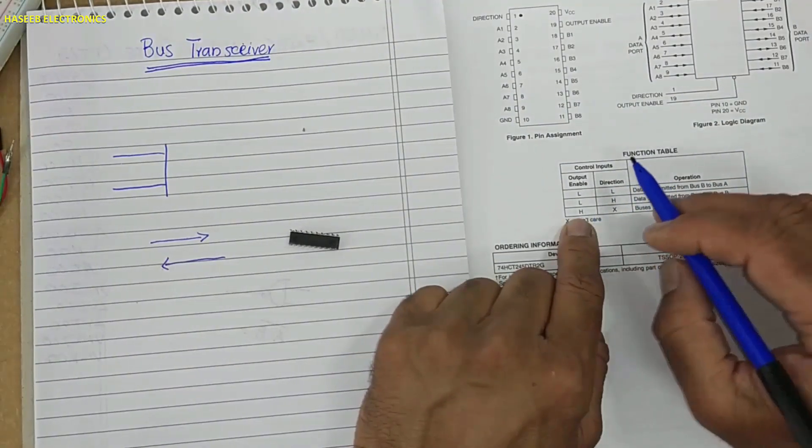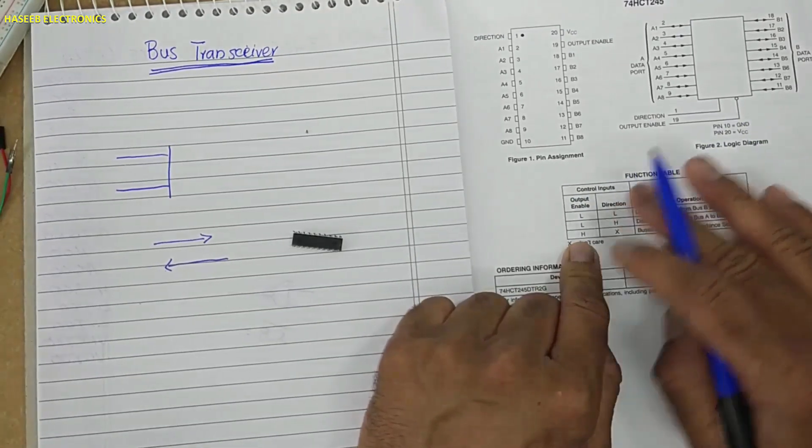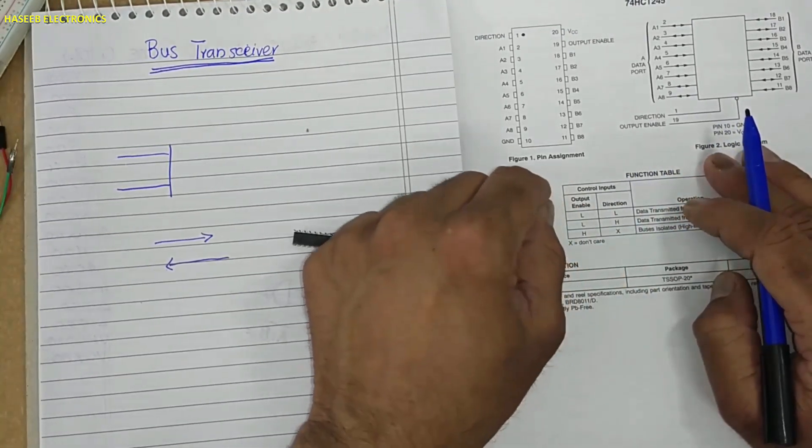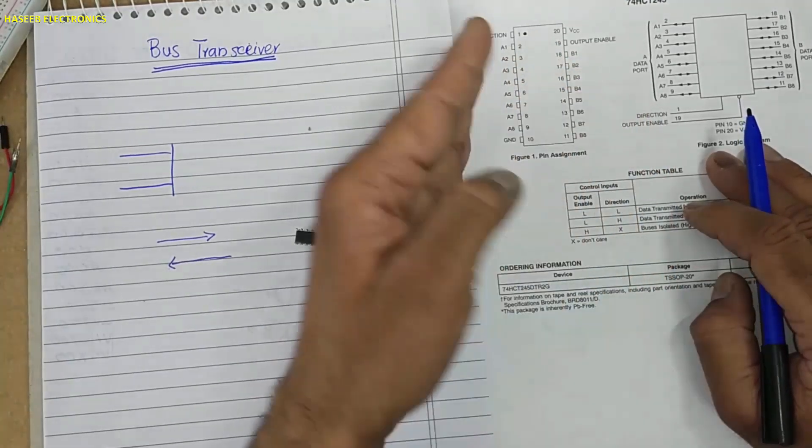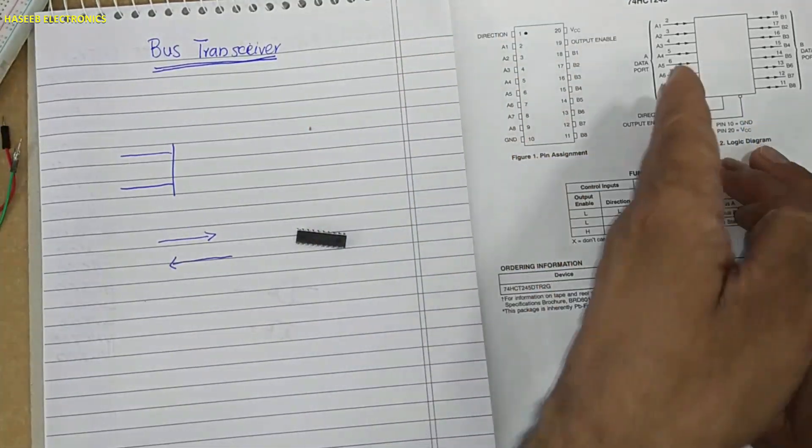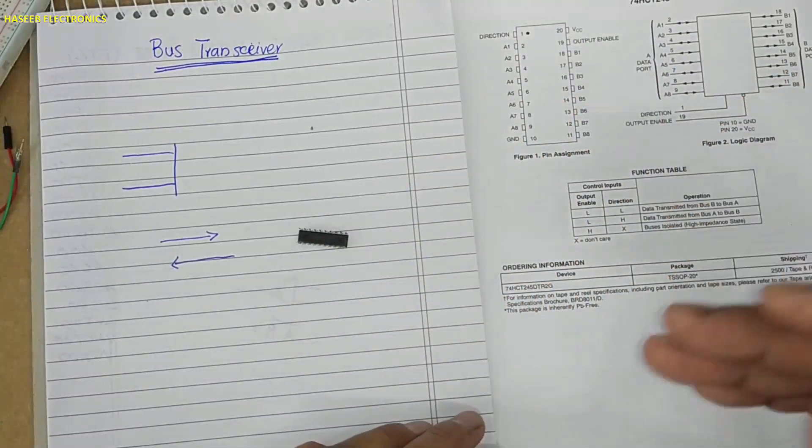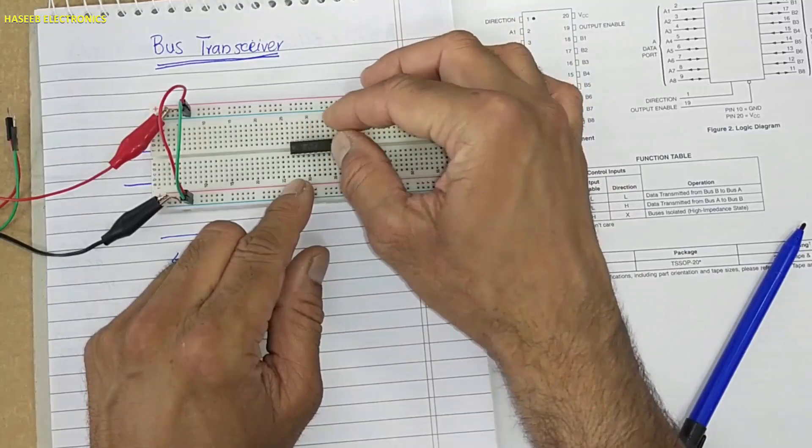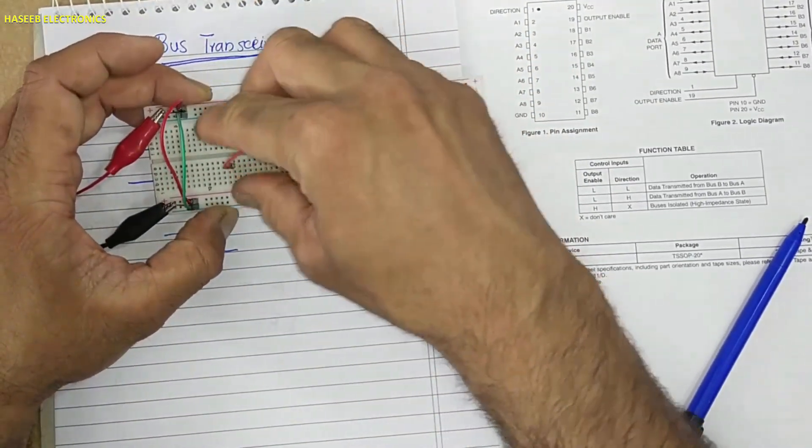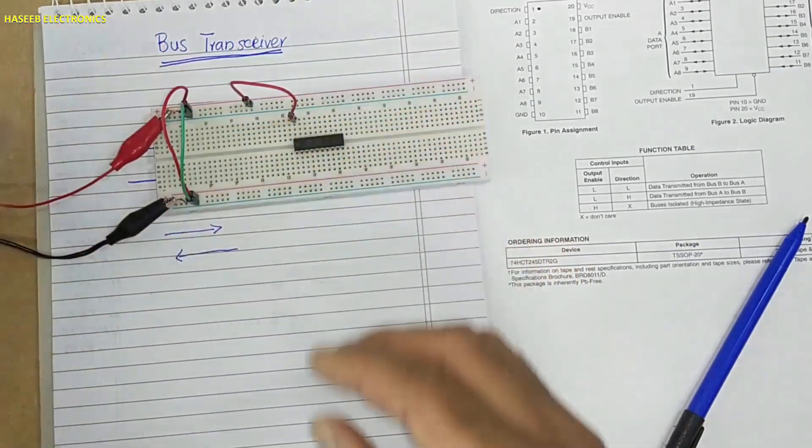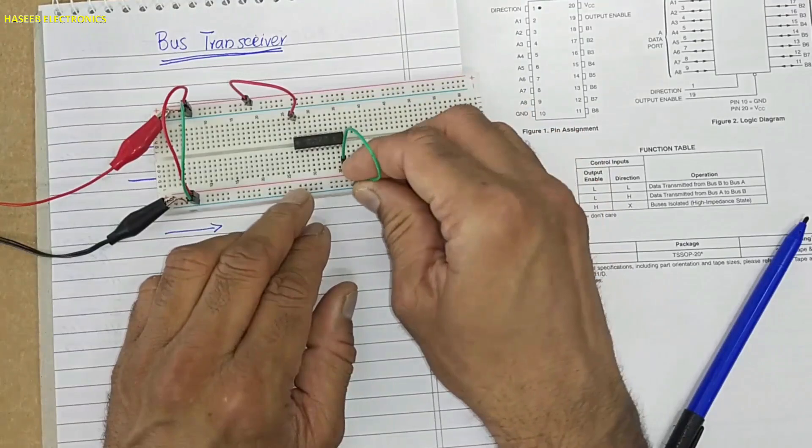If output enable is high, this line is high, bus is isolated. It will go in high impedance state. It will behave as an open circuit - no data from A to B or B to A. So it will become as an open circuit, high impedance.